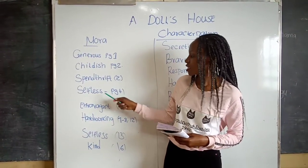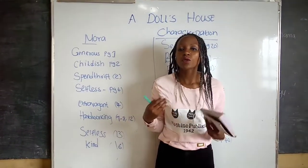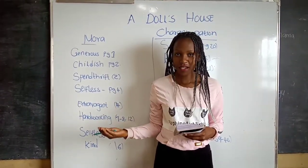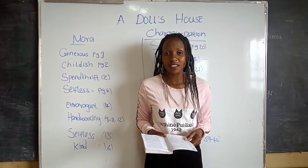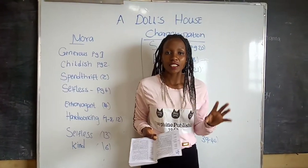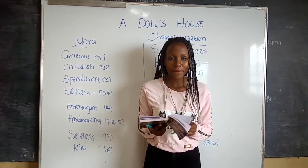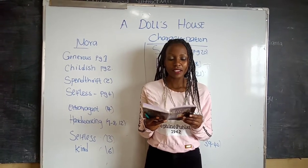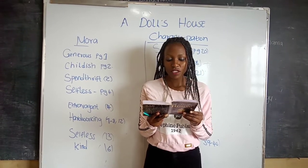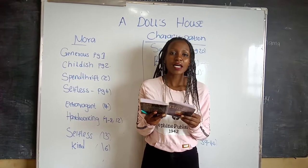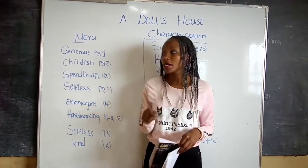Number three, she is selfless. That is on page four. A selfless person is one who cares more about the needs of others than their own needs. This is seen on Christmas Day, whereby she bought gifts for all her kids and the maids and bought nothing for herself. Let us go to page four, in the middle. Check whereby Nora is saying: 'Here is a new suit for Ivar, a sword and a horse and a trumpet.' And there are also dress lengths and handkerchiefs for the maids. In that case, we see that she bought nothing for herself.